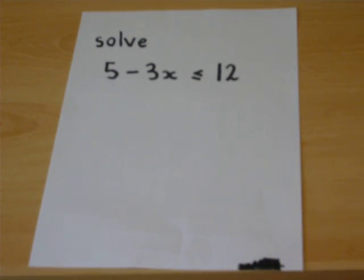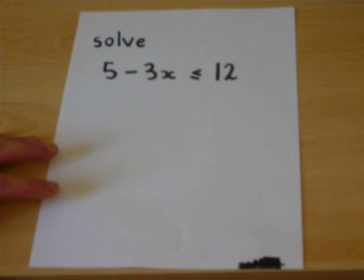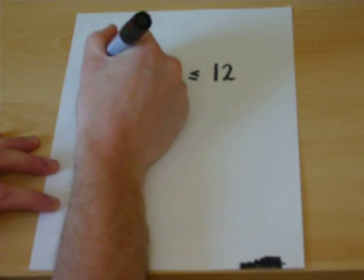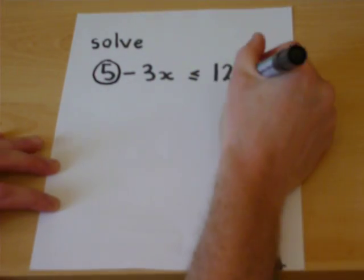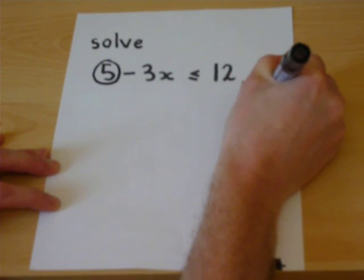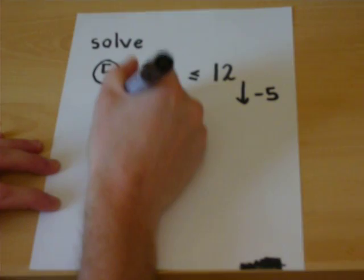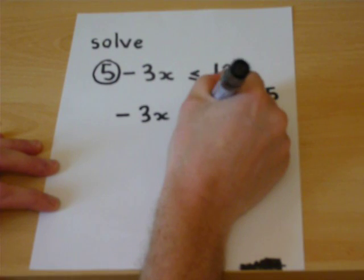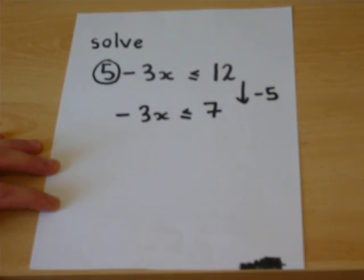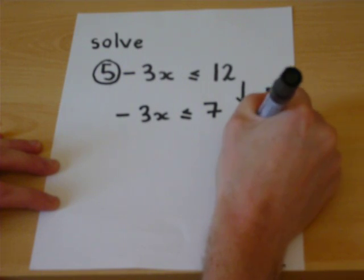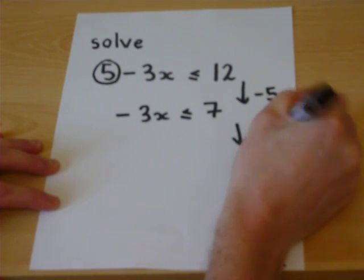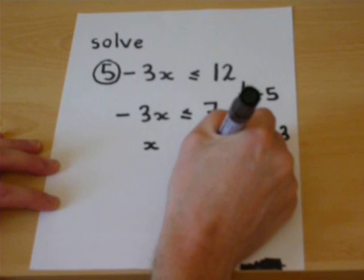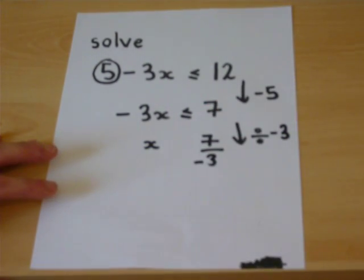There can be a few quirks to be aware of. Here's a second equation. We have a plus 5 here, and this must be seen as being a plus 5. I'll begin by subtracting 5 from both sides, so minus 3x is less than or equal to 7. I must then divide by minus 3, so x is 7 over minus 3. But here's a quirk.